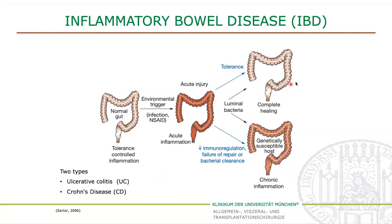Then it down-regulates itself, so there is a complete healing without residual tissue damage. In contrast, when there's no functional immune homeostasis, as it's the case in IBD, there's an ongoing immune response, so a chronic inflammation. And IBD can be subdivided into two types: ulcerative colitis, or UC, and Crohn's disease, or CD.